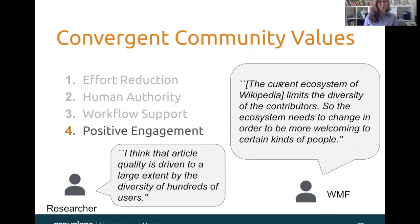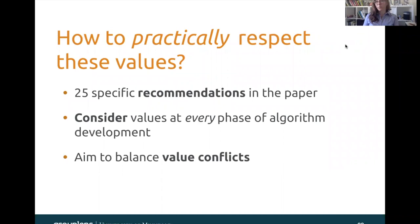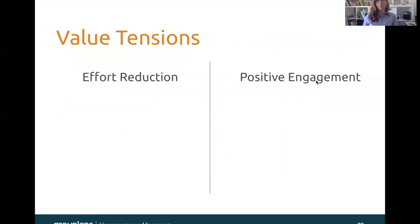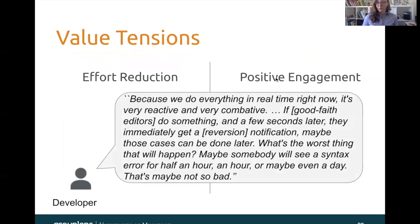These are the five values that emerged from our study, but how can we practically respect these values? There are 25 specific recommendations in the paper, but at a high level, we need to explicitly consider these values at every phase of algorithm development, and we need to aim to balance value conflicts when they arise. For example, there's a value tension between effort reduction and positive engagement. It's very easy and takes less effort to just revert an edit and make it go away, but that might have negative consequences for the user who created that edit. In the words of one developer: because we do everything in real time right now, it's very reactive and very combative. If good faith editors do something and a few seconds later they immediately get a reversion notification, maybe those cases can be done later — what's the worst thing that will happen? Maybe somebody will see a syntax error for half an hour, an hour, or maybe even a day — that's maybe not so bad. This developer is explicitly calling out the idea that there are different values to consider: one is effort, and the other is the experience of the user who's affected by this edit reversion process.